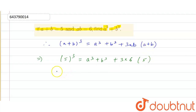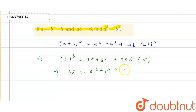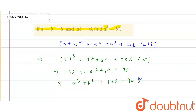So 5 cube equals 125, equals a cube plus b cube plus 3 into 6 which is 18, and 18 into 5 is 90, plus 90. So the value of a cube plus b cube equals 125 minus 90, which equals 35.